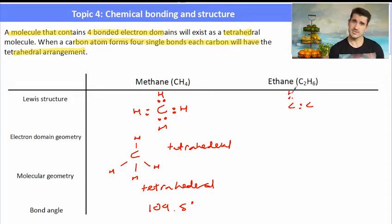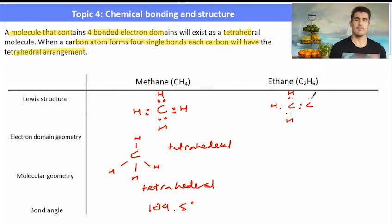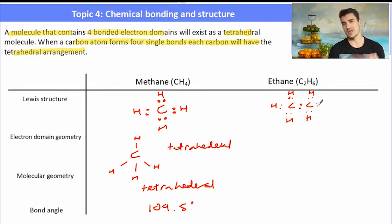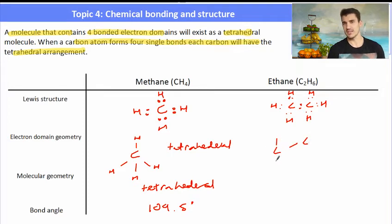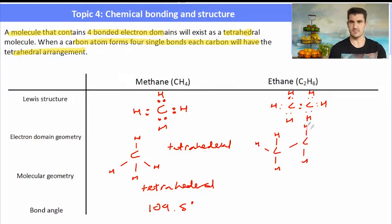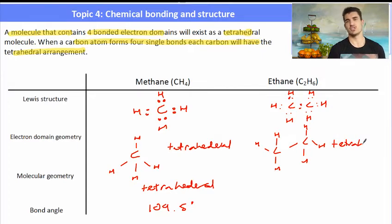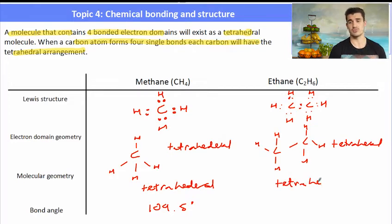Ethane is two carbons connected together and then each carbon is connected to three hydrogens. However, each carbon has four single covalent bonds. So each of the carbons will exist in the tetrahedral formation. The electron domain geometry will be tetrahedral because each carbon has four covalent bonds and four electron pairs. The geometry of the carbons is also described as tetrahedral, with a bond angle between each of those bonds of 109.5 degrees.